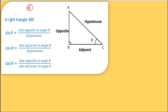In trigonometry, we mainly deal with the right angle triangle — a triangle where one angle equals 90°. Here, angle B is 90°.